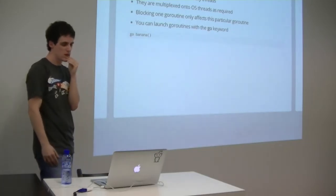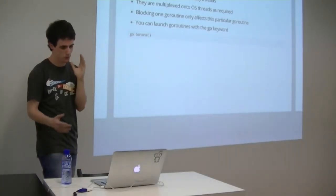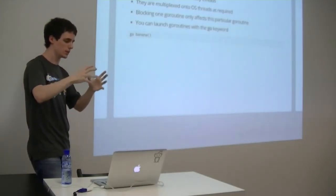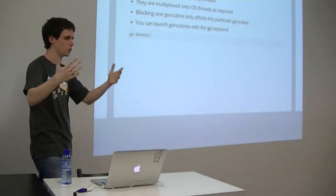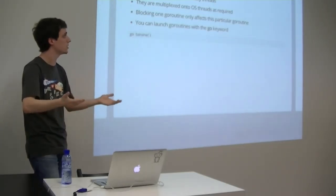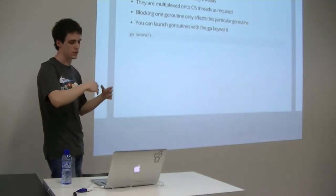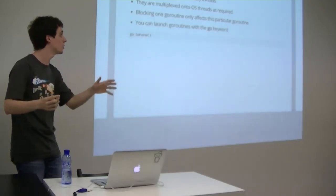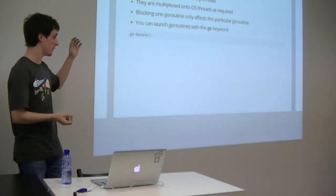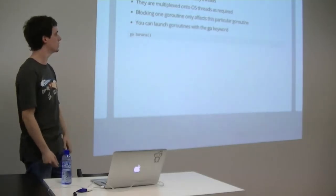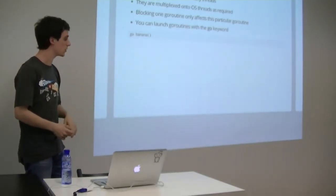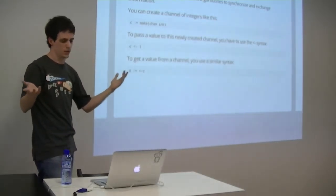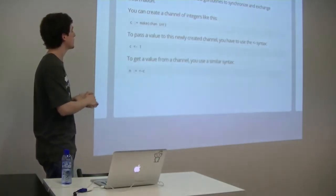What are goroutines? You can think of goroutines like threads, but you'd be mistaken — they are multiplexed onto OS threads as required. The runtime manages goroutines according to your resources. If one goroutine is blocked, not all of them are blocked. A goroutine is simply a function call prefixed with the 'go' keyword — for example, 'go banana()'. Multiple goroutines are useful, but they need a way to pass information between each other.